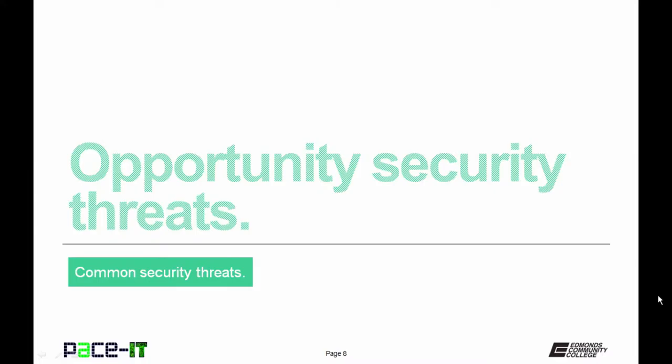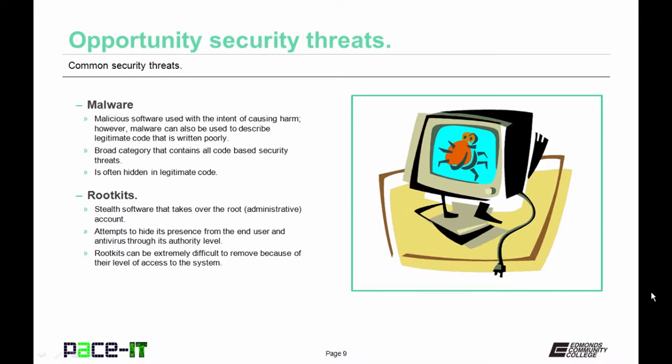Now let's move on to opportunity security threats. These are more along the lines of threats by opportunity — they exploit weaknesses and vulnerabilities. The first opportunity security threat we're going to mention is malware. Malware is a broad category, usually defined as malicious software that has the intent of causing harm, but it can also describe legitimate code that is written poorly. It covers any code-based security threat.